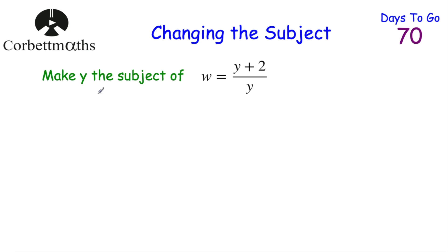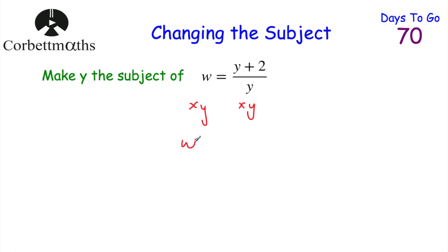Let's look at this question: make Y the subject of W = (Y + 2) / Y. This is more complicated than the others because we've got two Y's. When you've got something like this, you want to bring all the Y's to one side, then factorise to get a single Y. I notice there's a Y in the denominator, so I'm going to multiply both sides by Y. W × Y gives WY on the left, and multiplying (Y + 2) / Y by Y gives Y + 2 on the right.